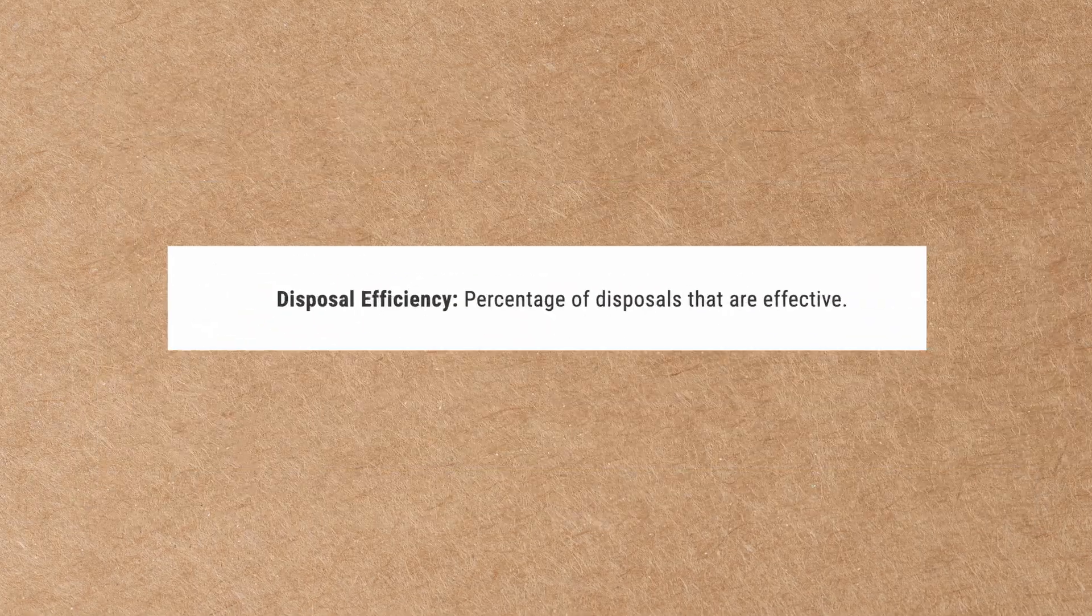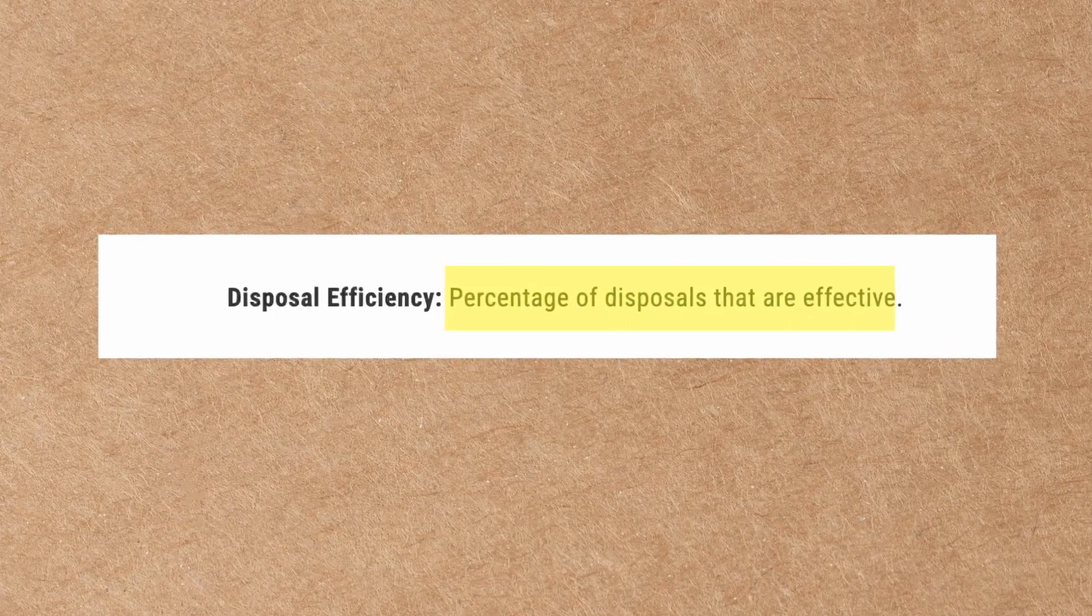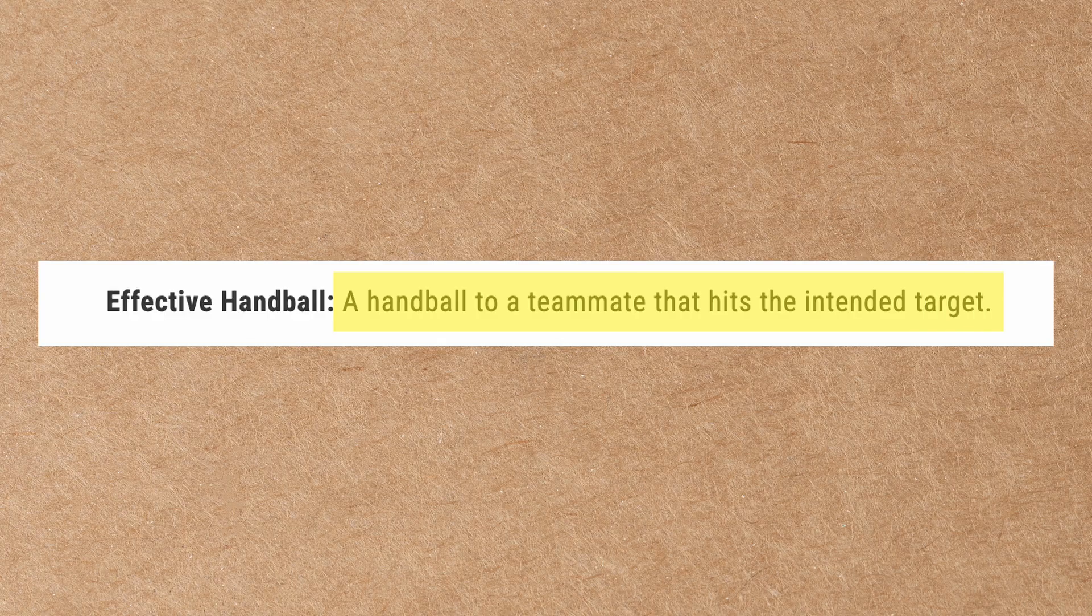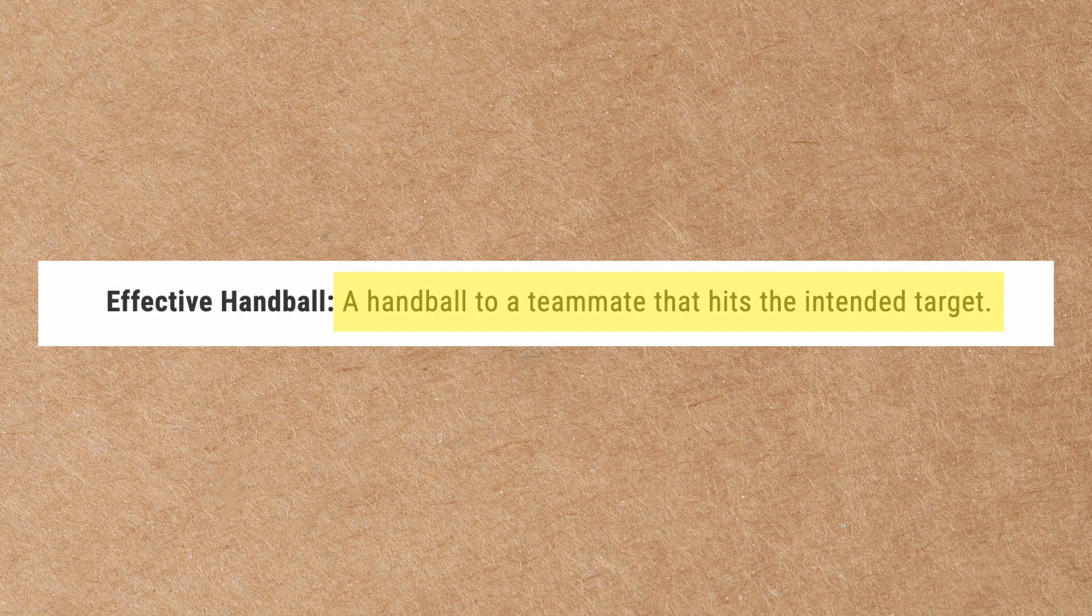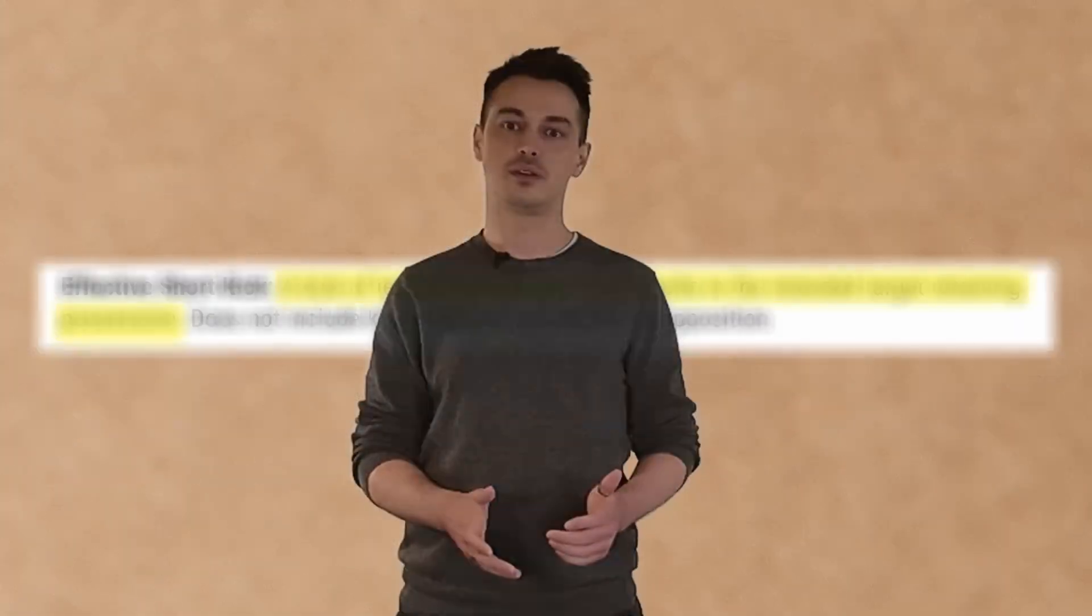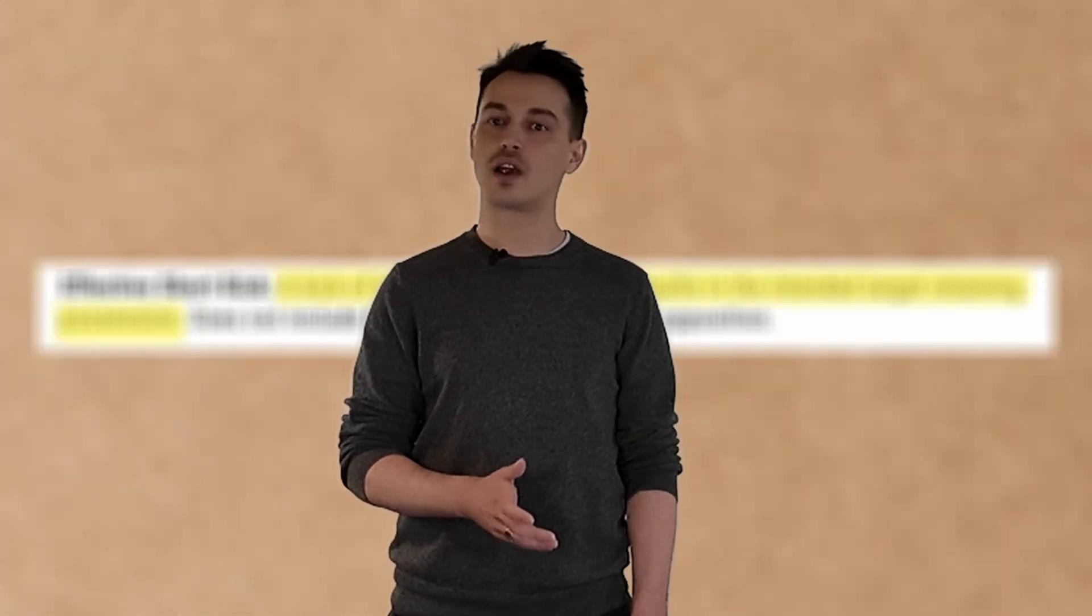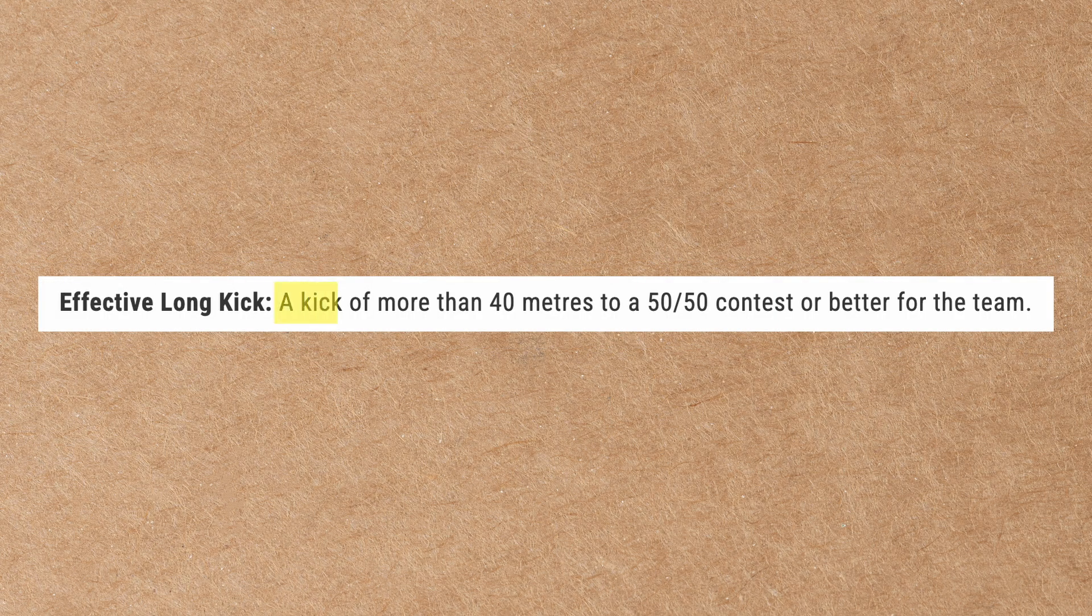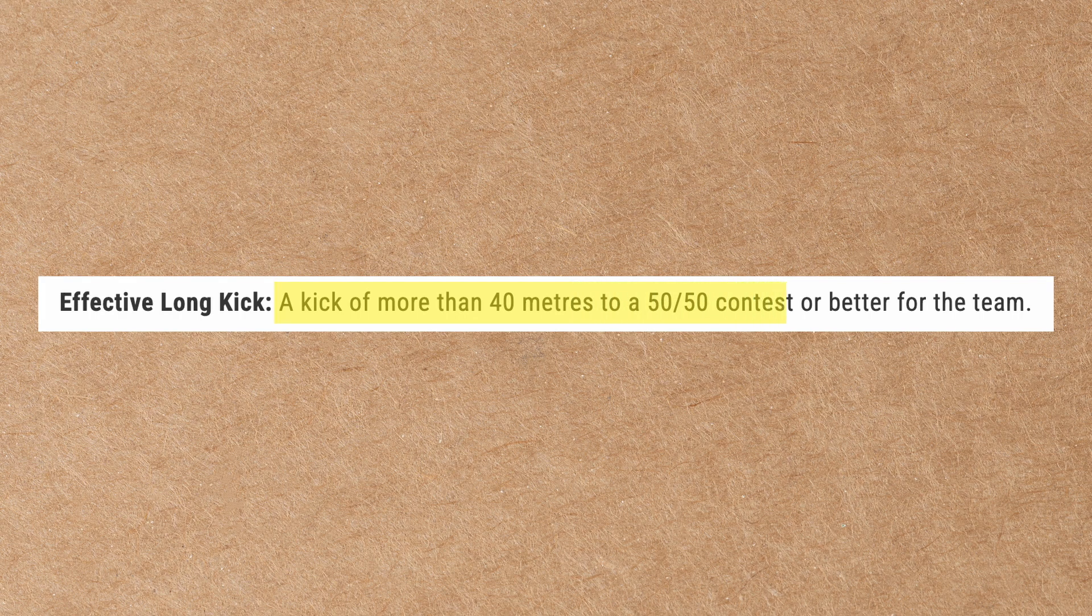Disposal efficiency. Definition: percentage of disposals that are effective. So what defines an effective disposal? Effective handballs are defined as a handball to a teammate that hits the intended target. What about effective kicks? Effective short kicks are defined as a kick of less than 40 meters that results in the intended target retaining possession. So what about long kicks? Well, this is where I think it gets most interesting. Champion Data defines an effective long kick as a kick of more than 40 meters to a 50-50 contest or better for the team. And this is where myself and others believe the main problem lies.